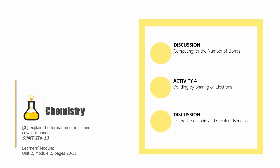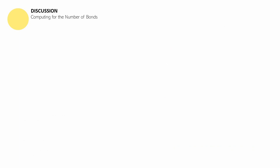This is a three-part session. It begins with a discussion on computing the number of bonds. We are talking about chemical bonding — specifically, what happens when elements share electrons. How many bonds will there be? For example, in carbon dioxide (CO2), step one is to get the Total Available Valence Electrons, or TAVE.